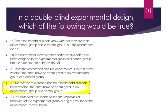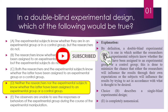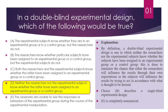Now let's check. Yes, you are right. The answer is D. By definition, a double blind experimental design is one in which neither the researcher nor the experimental subjects know whether the subjects have been assigned to an experimental group or a control group. This is done to minimize the chance that either the researchers will influence the results through their own expectations, or the subjects will influence the result by trying to act in accordance with what is thought to be desired. That's why D is the correct option.